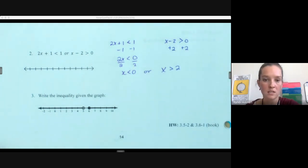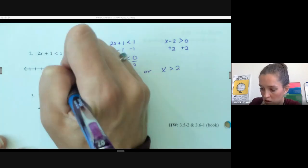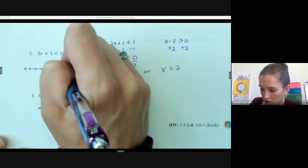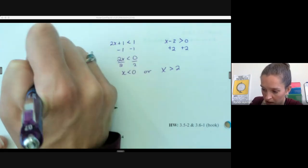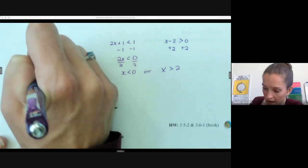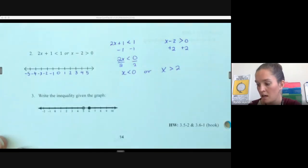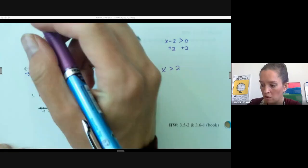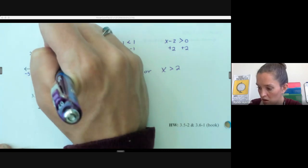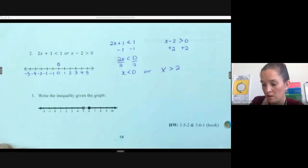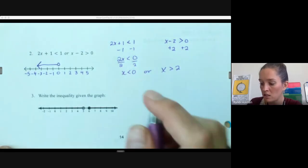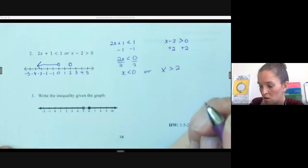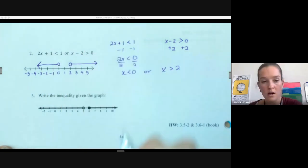So our solution is x is less than 0 or x is greater than 2. So again, on our number line, we're just going to graph. Make sure you include values so that we know where we're at. x is less than 0, so again, we're going right up to 0 but not including 0. Less than 0, your variable is the smaller thing. Smaller numbers on your number line are to the left. x is greater than 2. Again, not including 2. Values that are larger, we're going to the right.